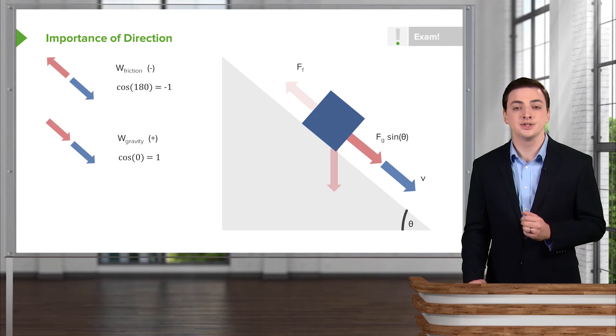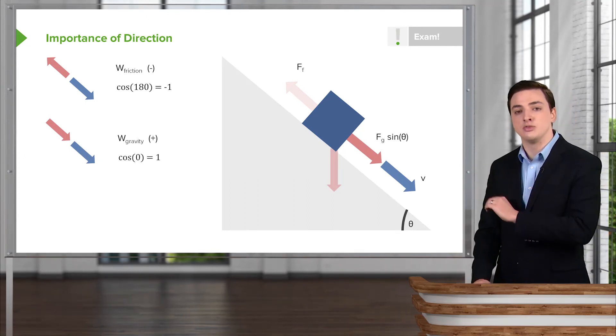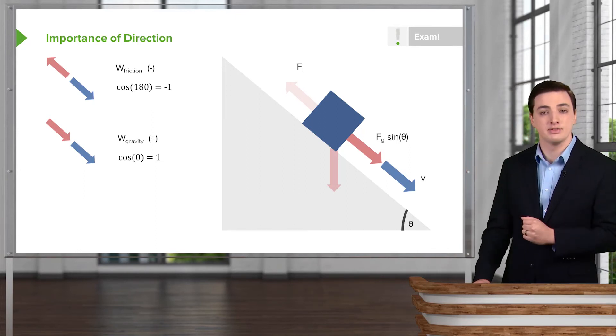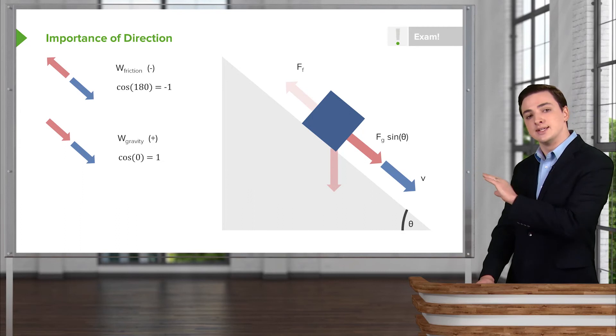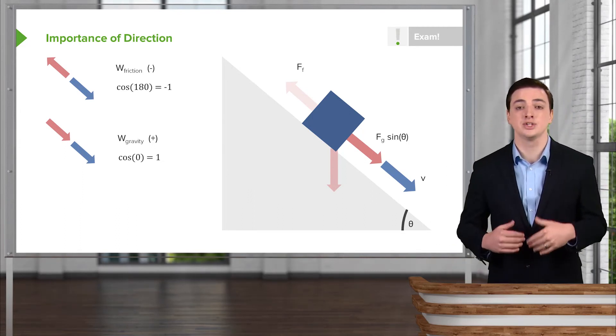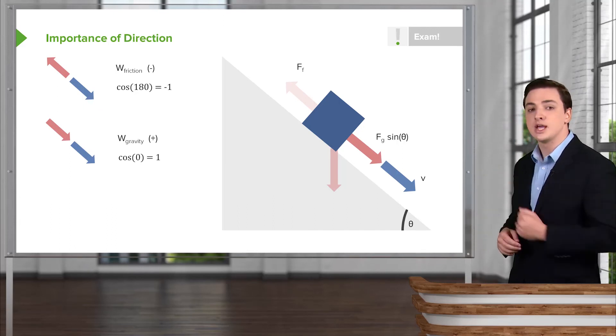On the other hand, we could consider the down the slope component of the gravitational force, which we saw was Fg times the sine of theta. So this force is acting down the slope, which is in the same direction as the motion of your object, the same direction as its velocity. When these are in the same direction, as you can see with the arrows here, the angle between them is now zero degrees.